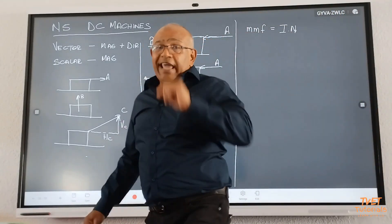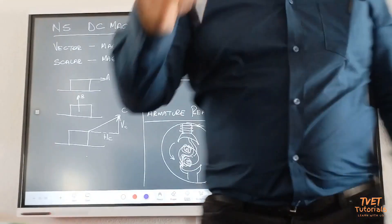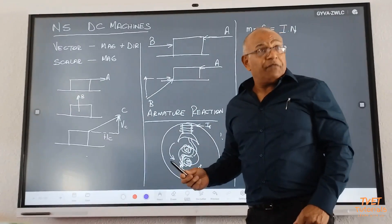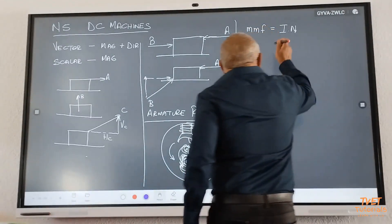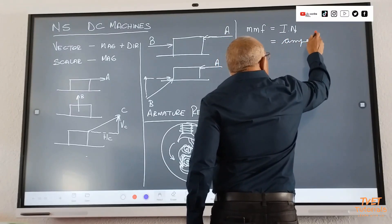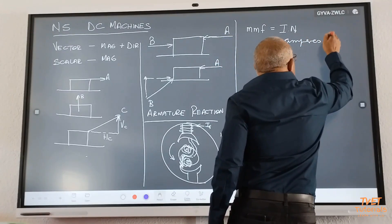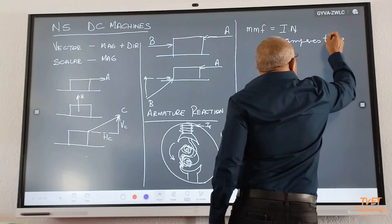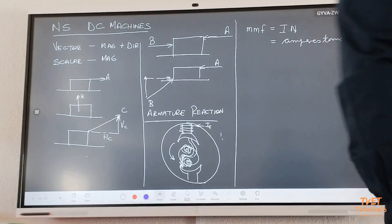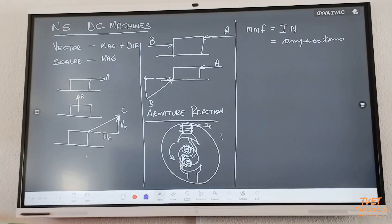Now, this N, what does it represent? It represents the number of turns in the coil on the pole. How do you measure current? In what unit? Amperes. This N is what? Turns. Give me another name for MMF. Ampere turns. Ampere turns.